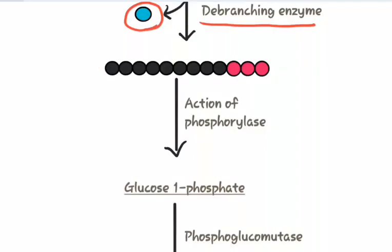Now, the remaining molecule of glycogen is again available for the action of phosphorylase and gets converted into glucose 1-phosphate.